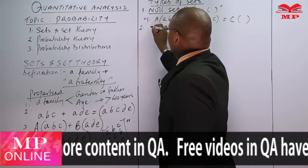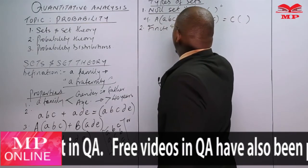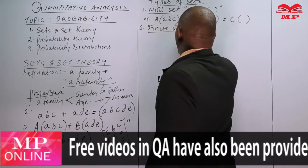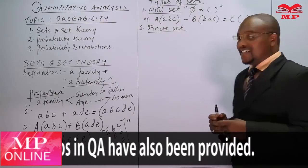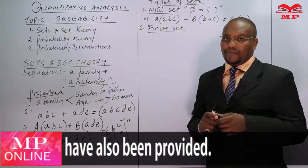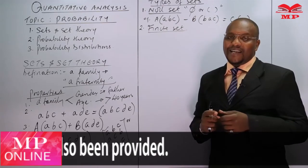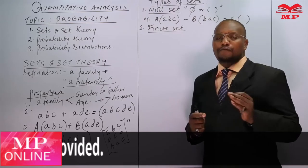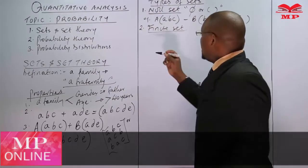Number two: we have a finite set. A finite set is a set whose elements can be listed down in full.